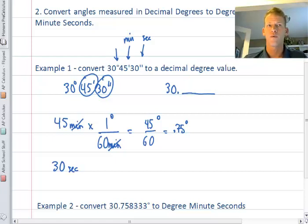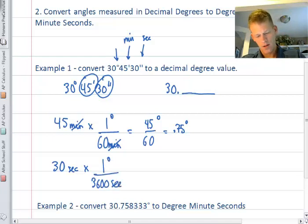For 30 seconds, one degree has 3600 seconds. From the dimensional analysis the seconds cancel and I'm left with 30 over 3600. Now I need to use my calculator to do that division.